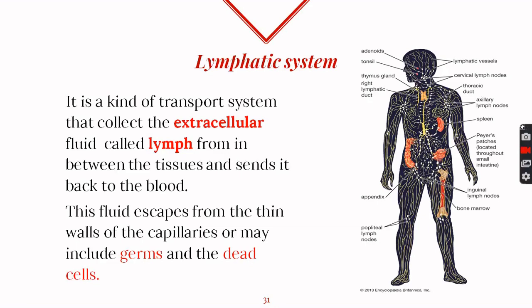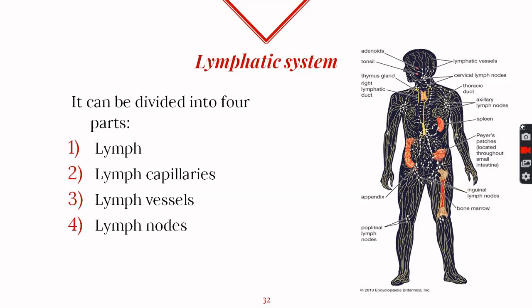The basic function of the lymphatic system is to collect lymph from the extracellular spaces and pour it back into the blood circulatory system. We can divide this system into four parts: lymph, lymph capillaries, lymph vessels, and lymph nodes.